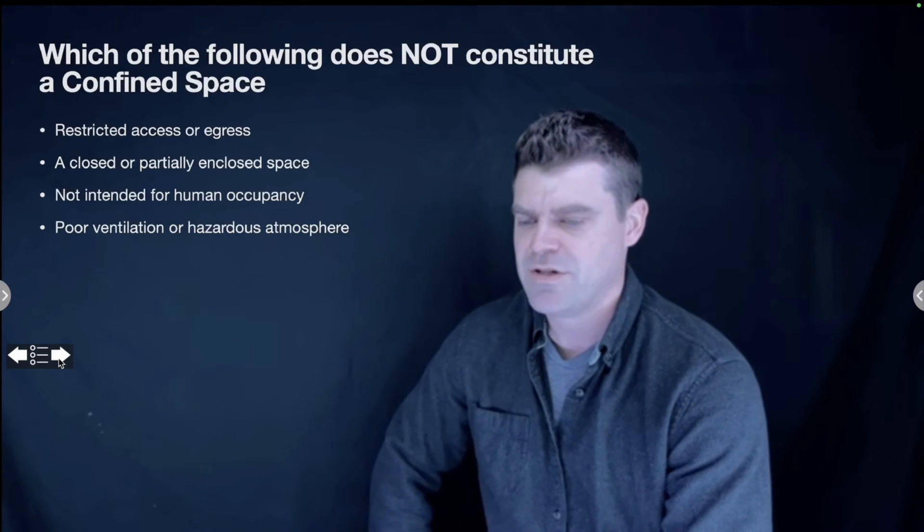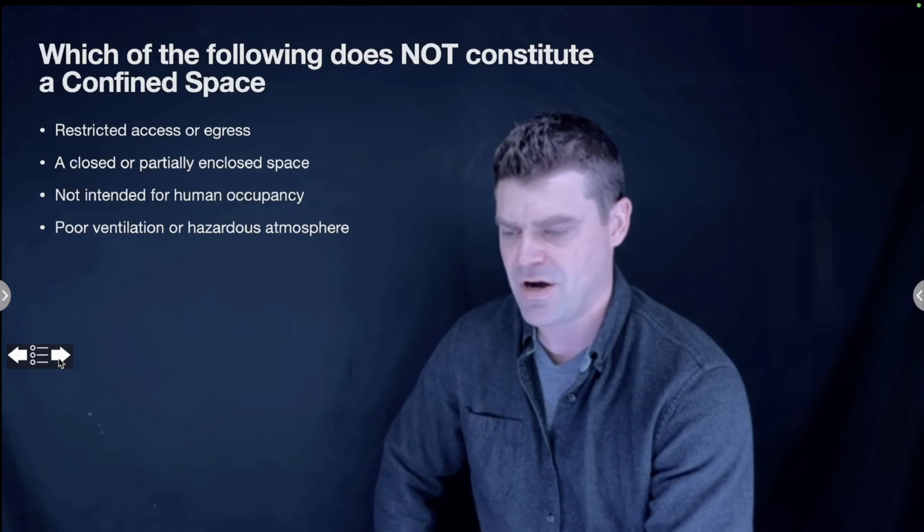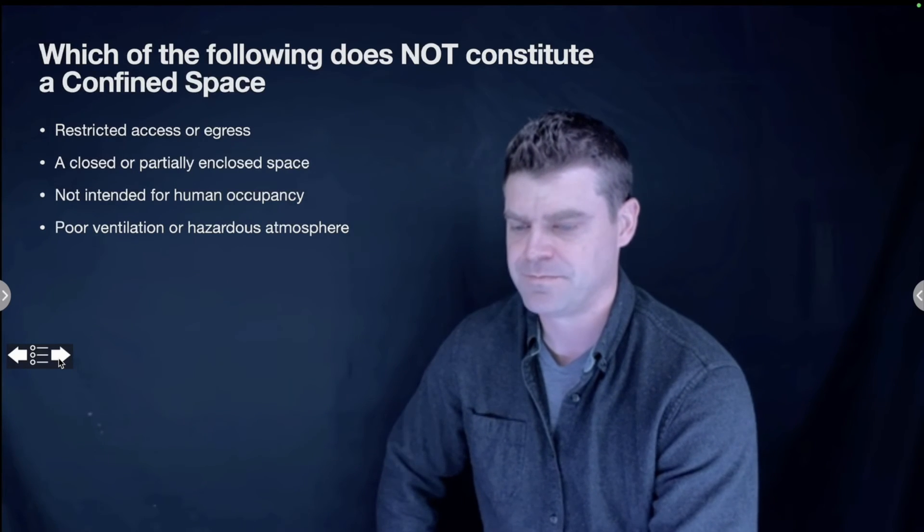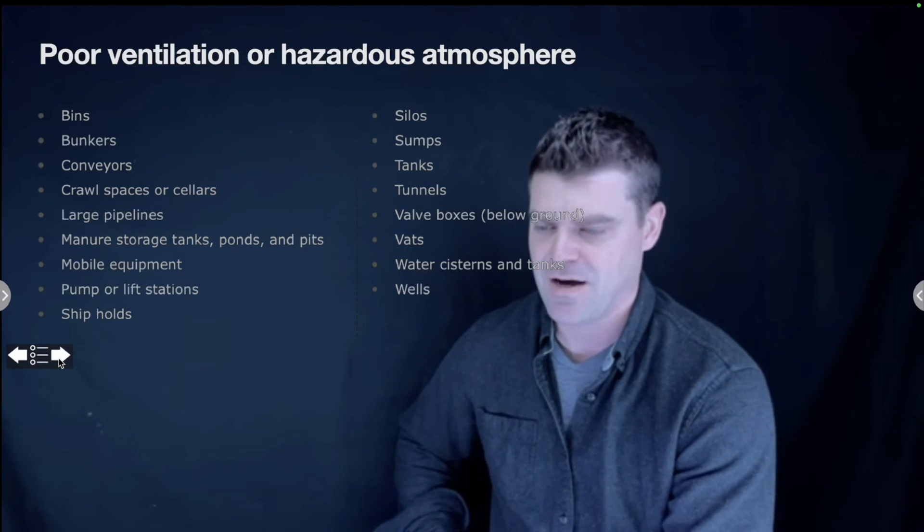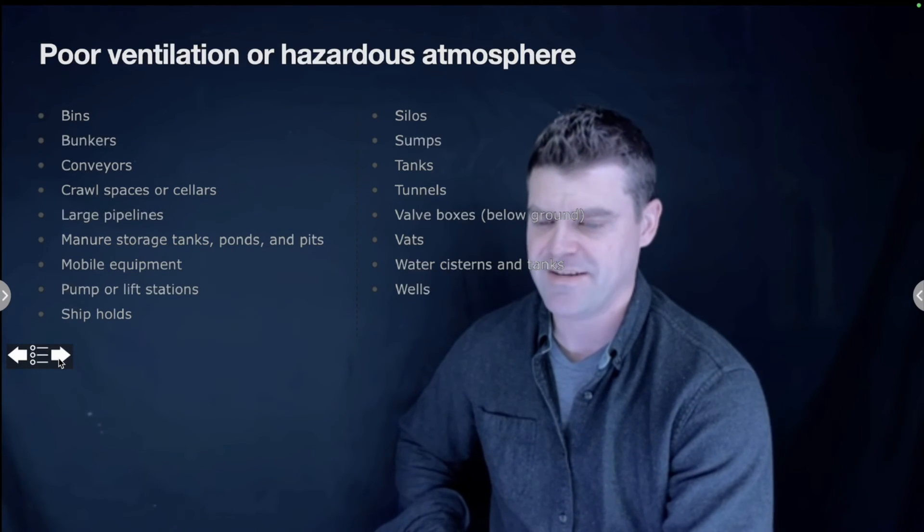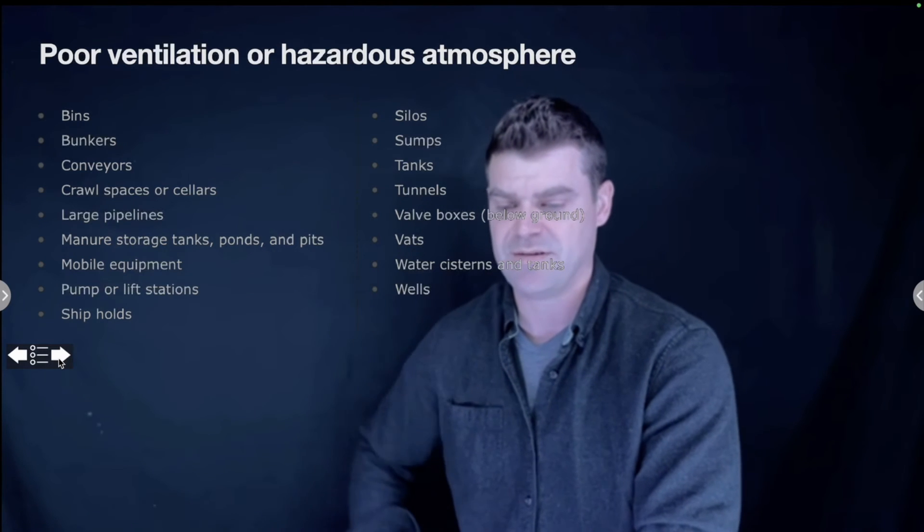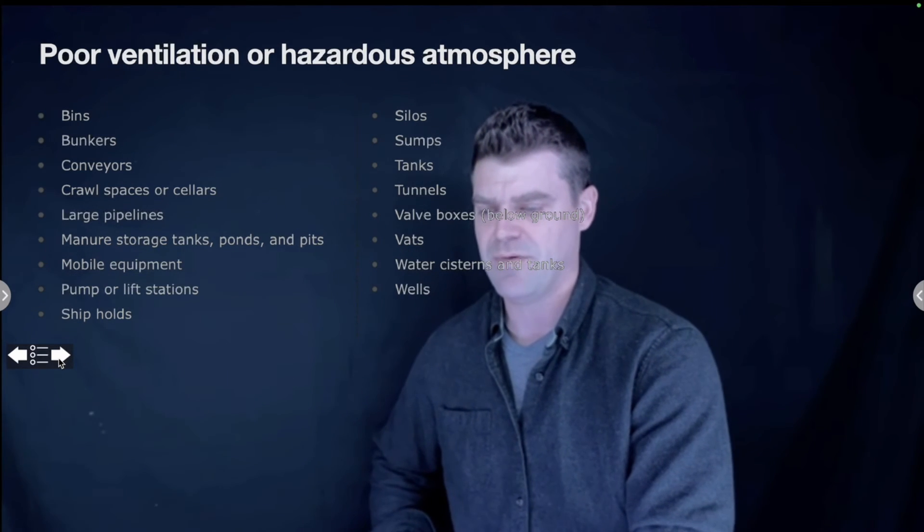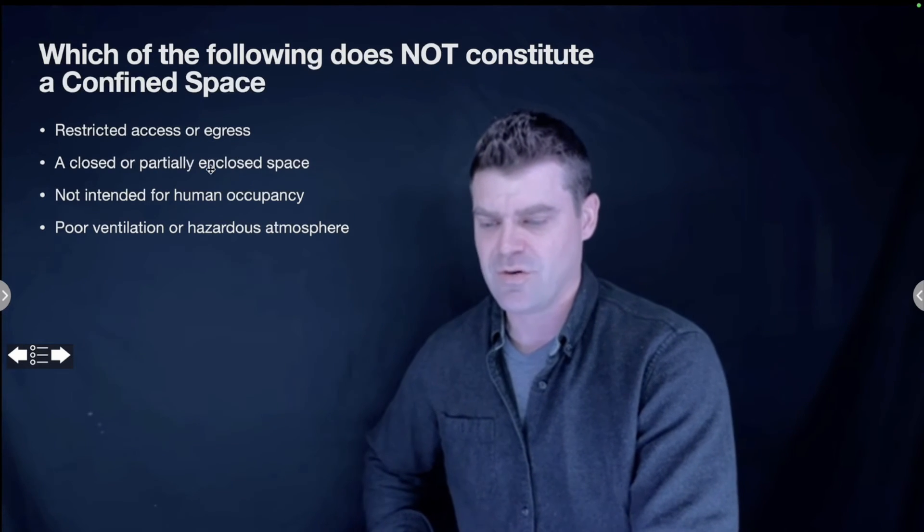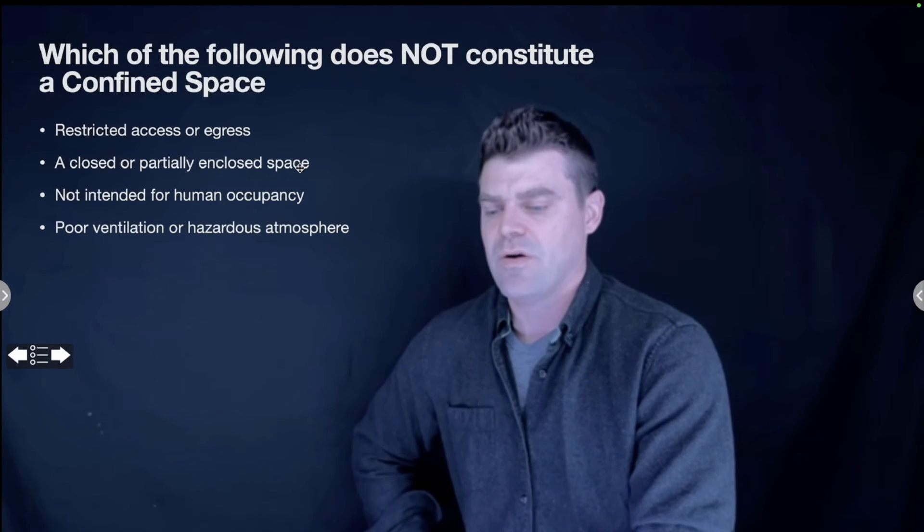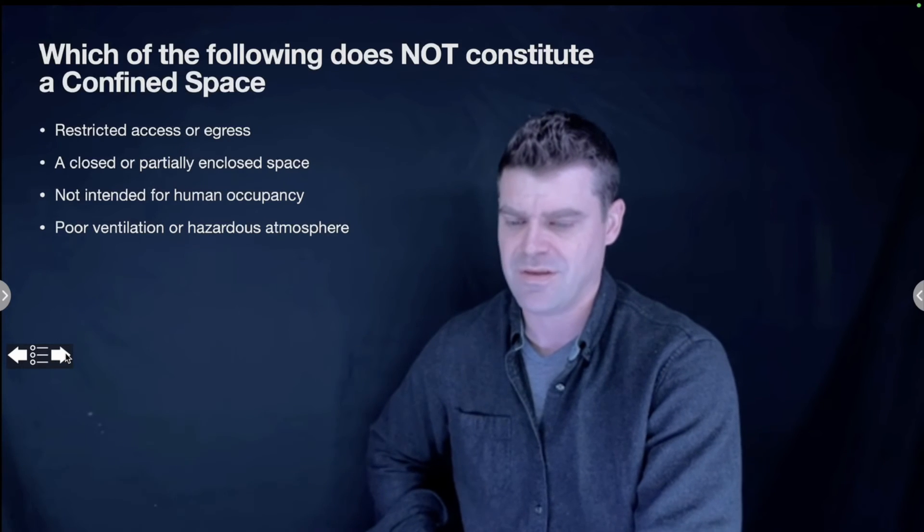Which of the following does not constitute a confined space? Restricted access or egress, a closed or partially enclosed space not intended for human occupancy, or poor ventilation or hazardous atmosphere? Poor ventilation or hazardous atmosphere. Here's some examples of different types of confined space that you might see. Poor ventilation or hazardous atmosphere can be present in a room or a place that is designed for human occupancy. If you're going into work somewhere and it's very dusty or there's not a lot of oxygen, maybe it's an explosive environment from dust or there's a lack of oxygen, you need to make sure that you have proper ventilation, but that doesn't make it a confined space. Going back to the last slide, confined space is when you have restricted access or egress, it is closed or partially enclosed, or it's not intended for human occupancy, like if it's a tank or a vat or something that's large but it wasn't actually designed for people to be inside.